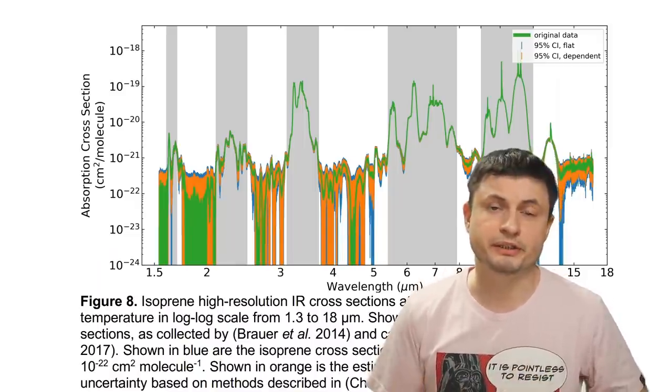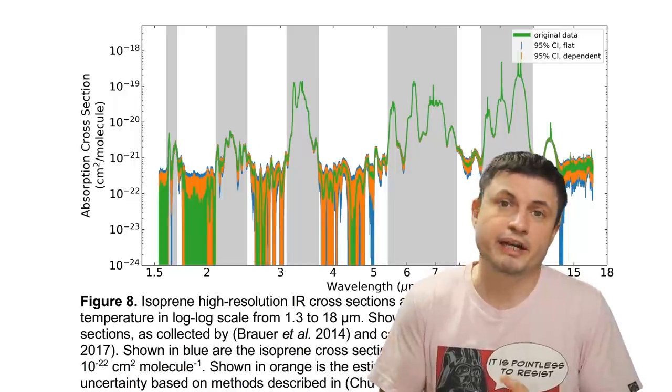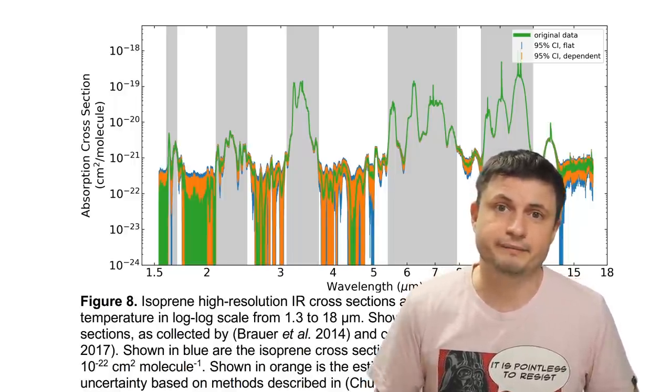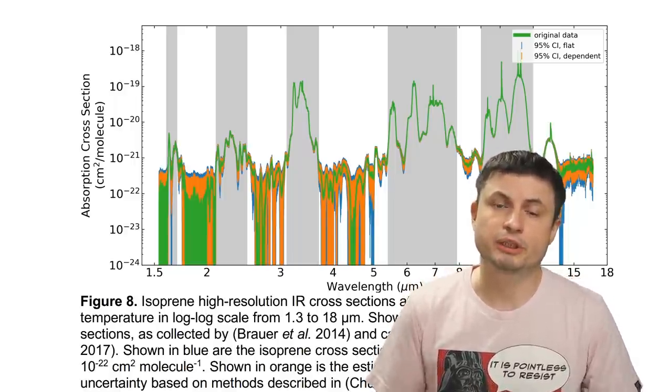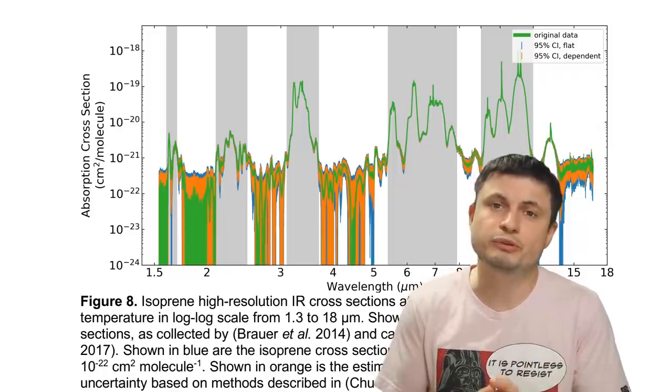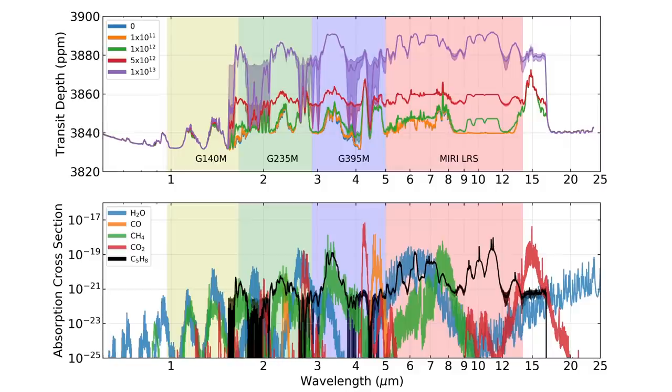At the same time, unfortunately, isoprene has a very similar signature, and we're talking about spectroscopic signature, to some of the other organic molecules, including methane. And actually several other hydrocarbon molecules do seem to possess a similar signature to this. With the basic comparison visible right here, the black is isoprene, with the other molecules represented in different colors.